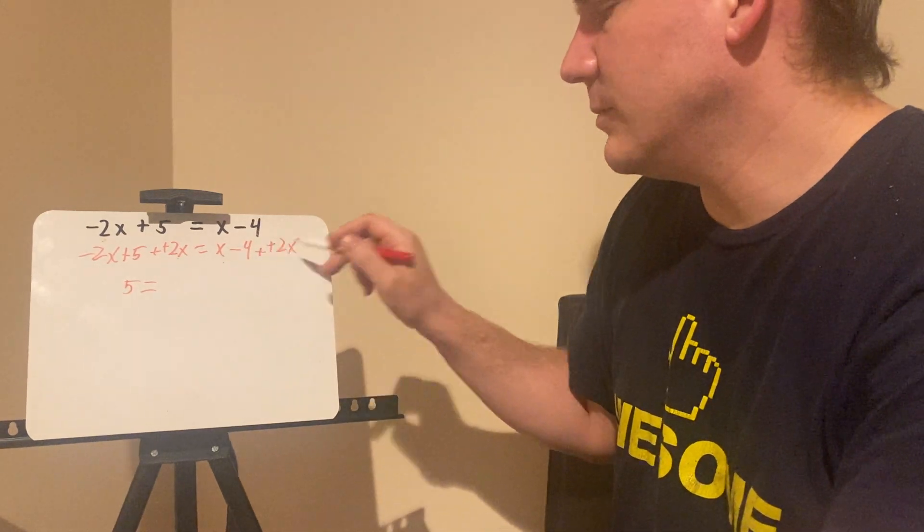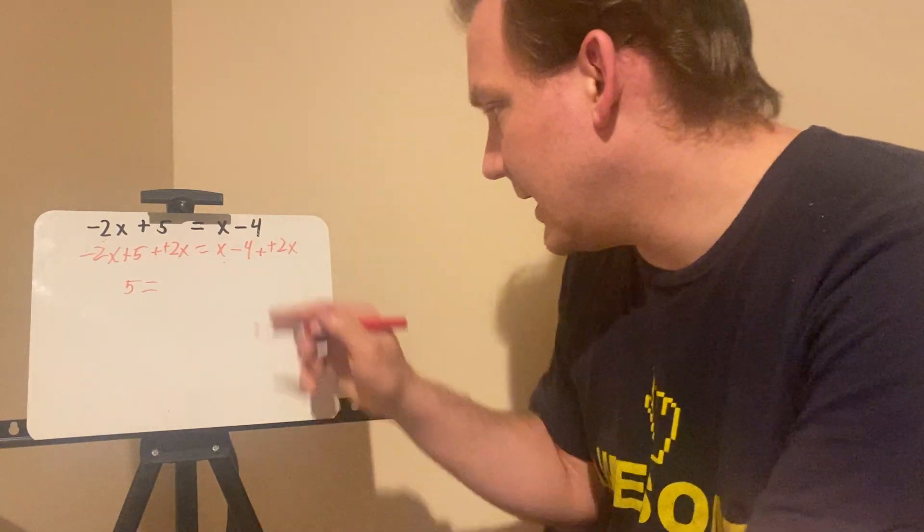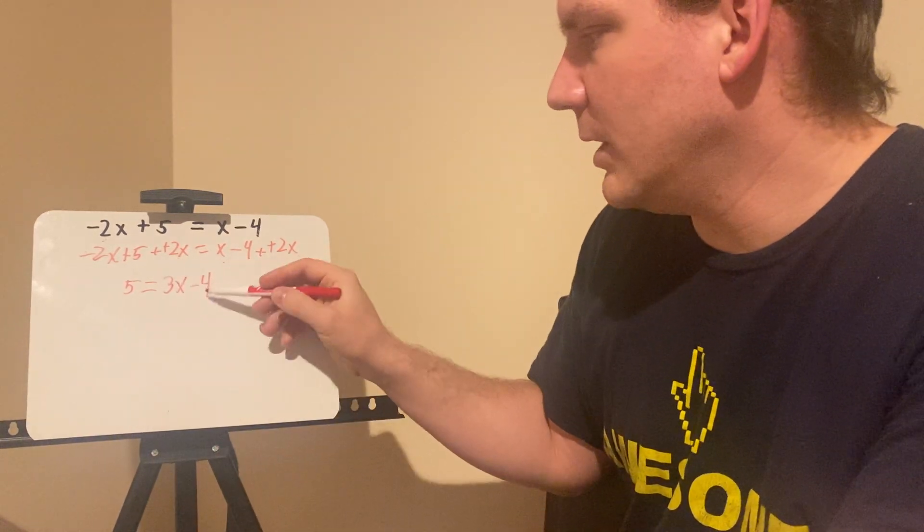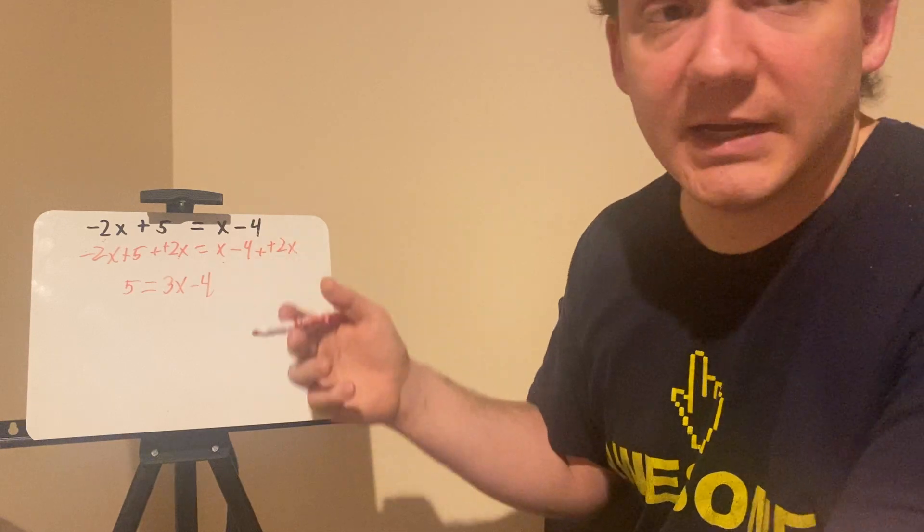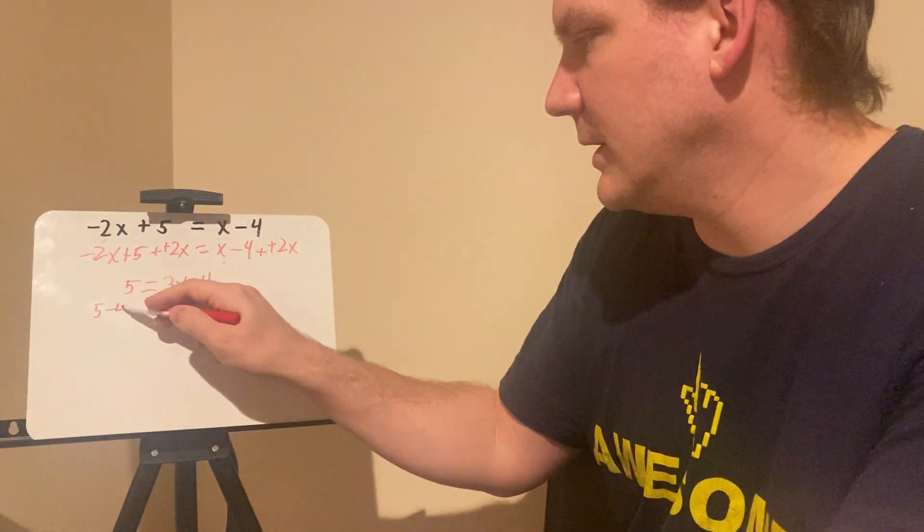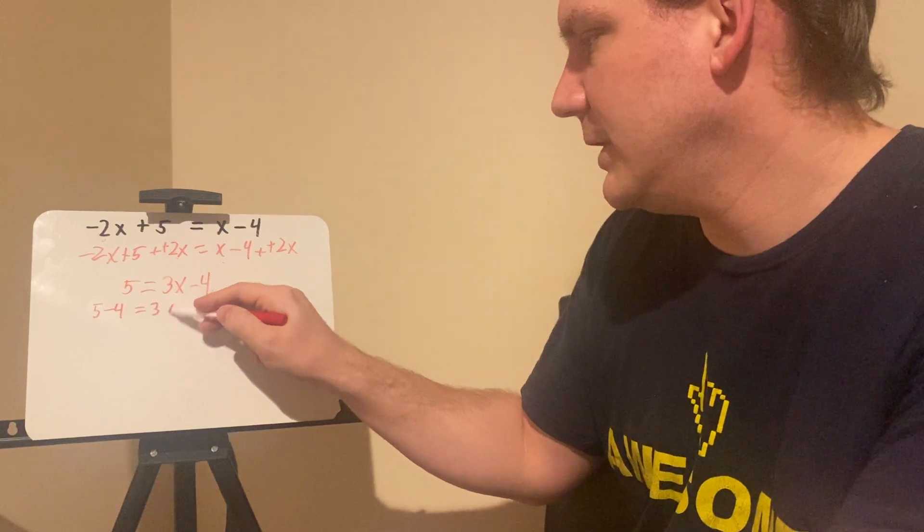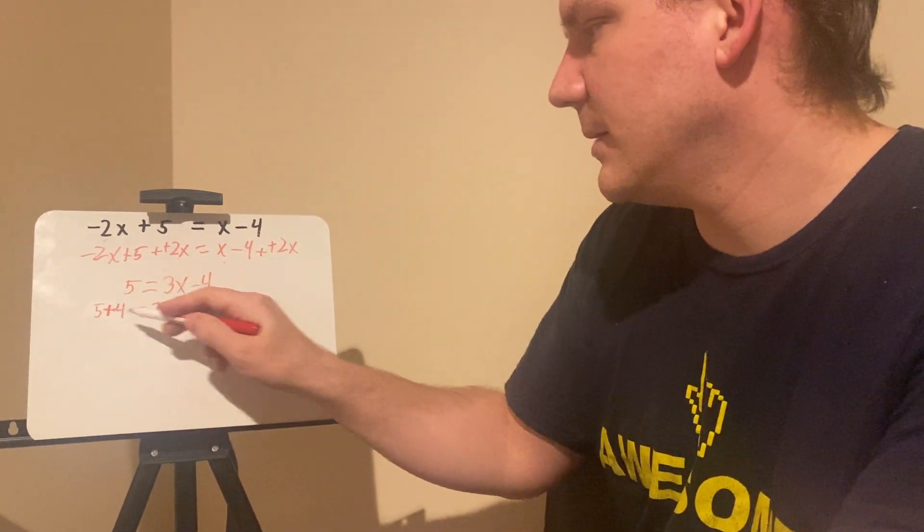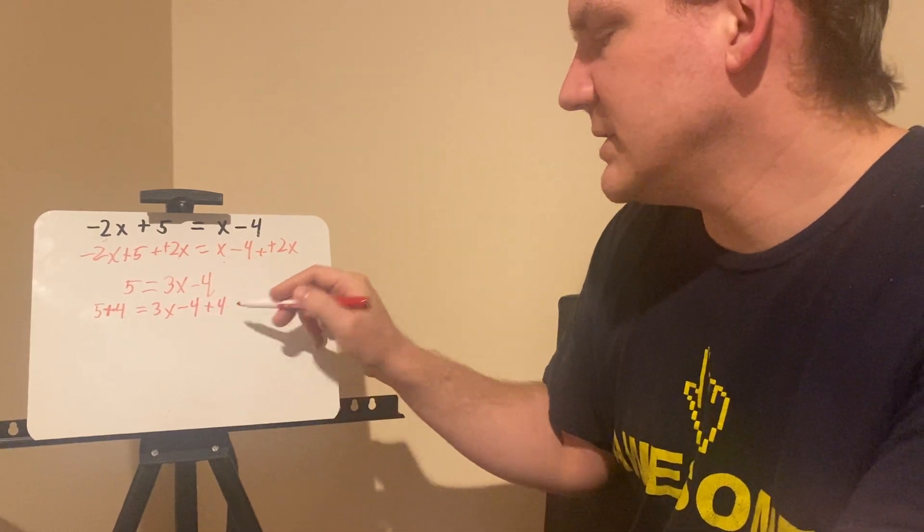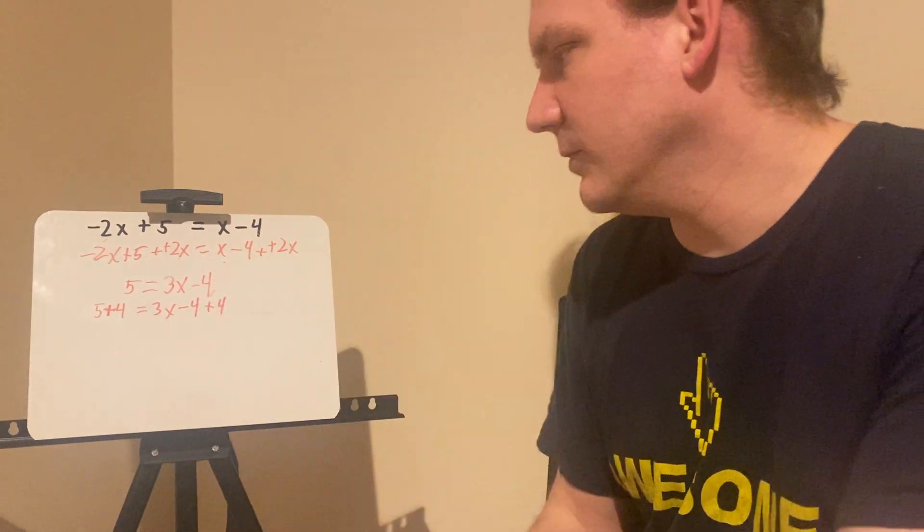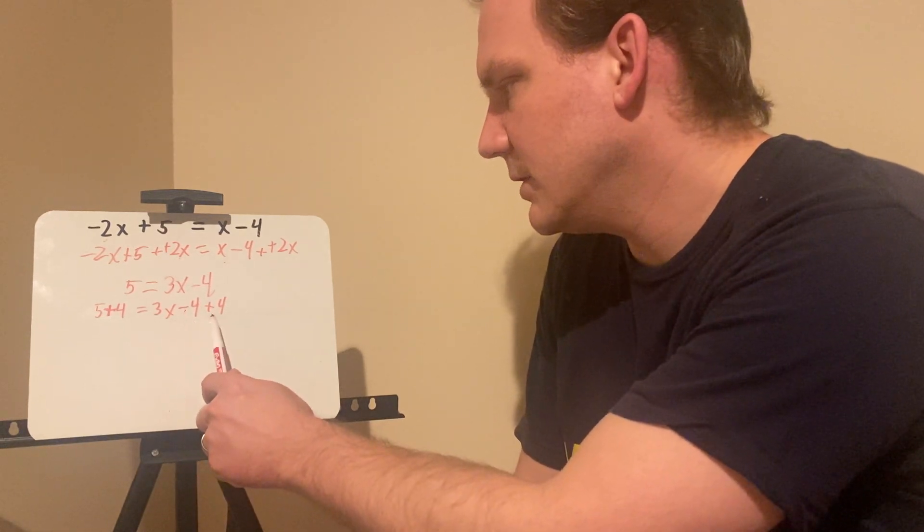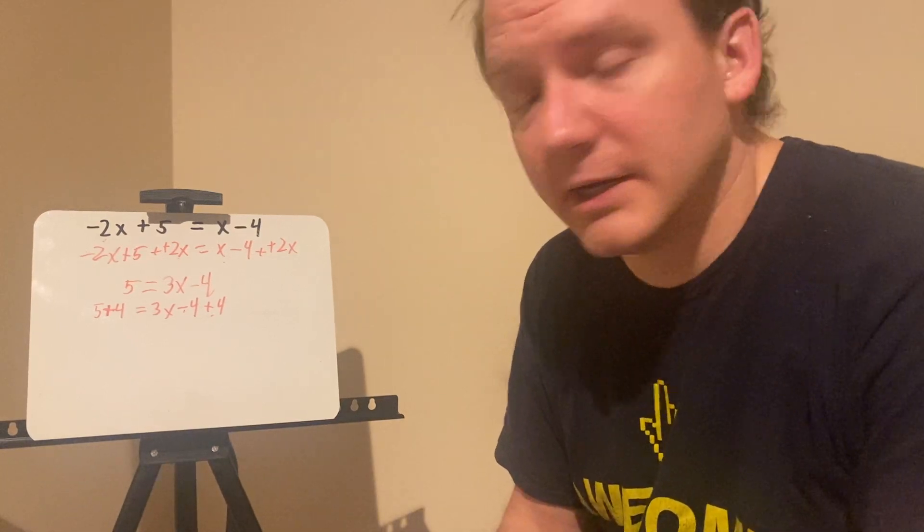x plus, whenever I subtract a negative, I just add it. x plus 2x is 3x minus 4. Now I want to get rid of the 4 over here to leave x by itself. So I'm going to do 3x minus 4 plus 4. The reason I add 4 is because I was subtracting originally over here. So since I was originally subtracting, the inverse is addition. I did subtraction by mistake there. But anyways, 5 plus 4 is 9.